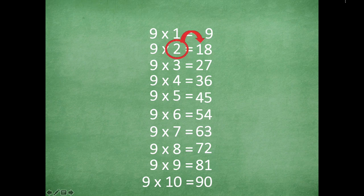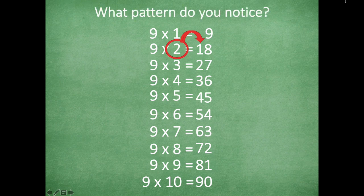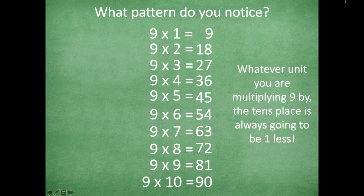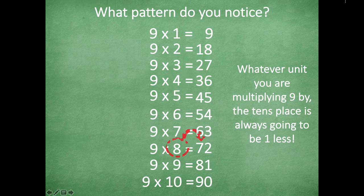Here's another strategy — so cool! If I have the number I'm multiplying by, the tens place of the product is going to be one less. So if I'm multiplying nine by two, one less than two is one — that's what goes in the tens place. Let's look at three: one less than three is two, so two goes in the tens place. For four: one less than four is three.